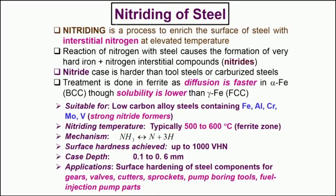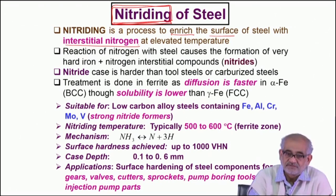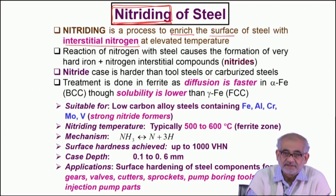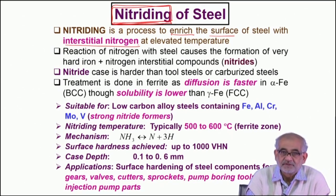That technique has certain limitations, which is why carburizing is very widely used. The technique I am referring to is based on introduction of nitrogen instead of carbon. Today we are going to discuss nitriding of steel and in particular gas nitriding. Nitriding essentially means we are going to enrich the surface of steel with nitrogen. Nitrogen is one of those four elements which are fairly small to be able to find a place in the interstices of alpha iron or BCC iron.